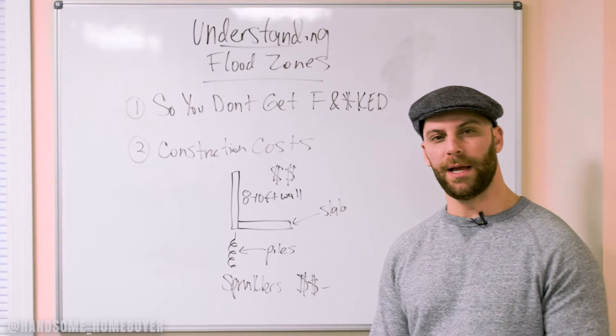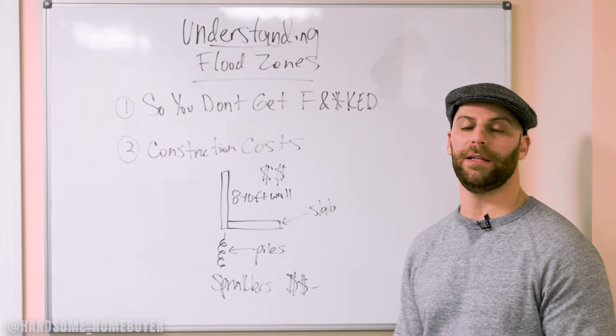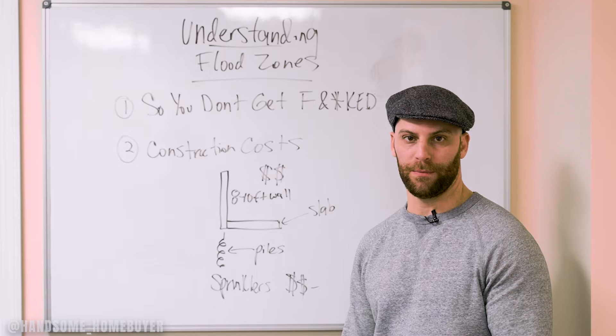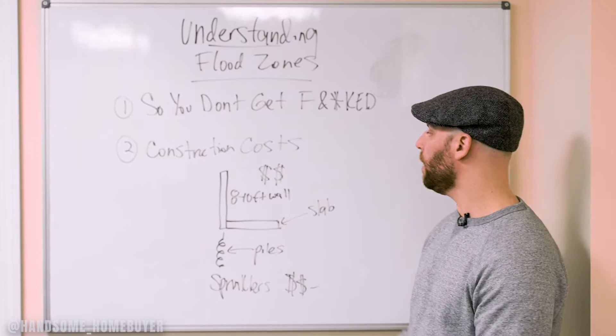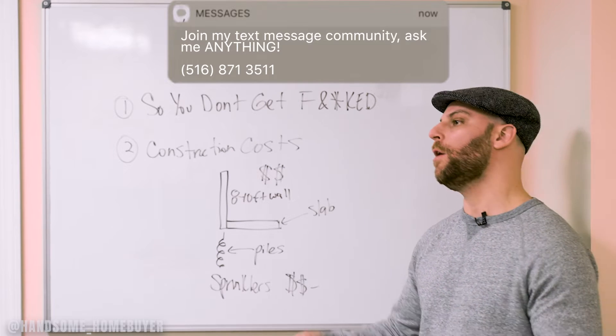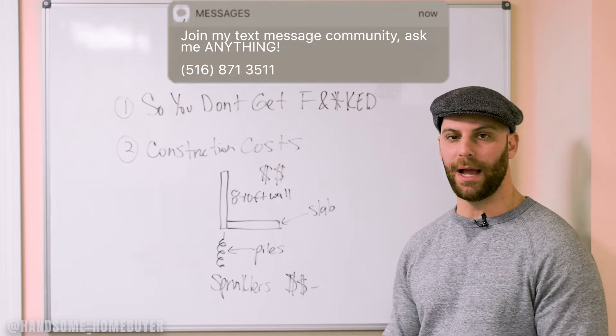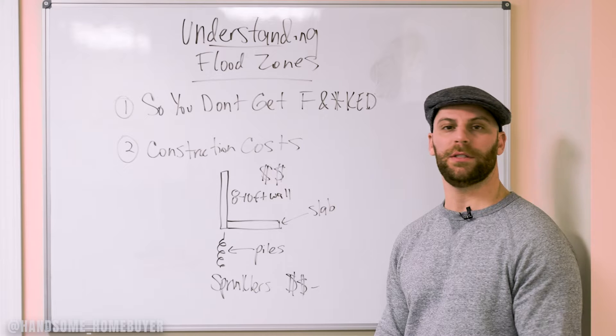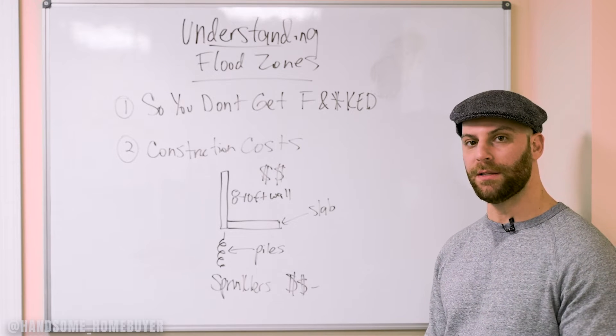So, let's first talk about number two, which is construction costs. If you're a developer and you're going to build or raise a house in the area, you have to understand that a lot more goes into building a house that is in a flood zone. Let's talk about building new construction for a second. The big thing is the foundations. The foundations are very expensive. You're talking about $40,000, $45,000, $50,000 on average if you're building a house that's anywhere from 1,600 to 2,200 square feet down by the water. You can get even more expensive. Why?